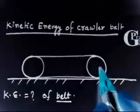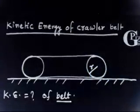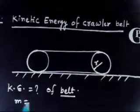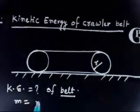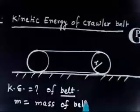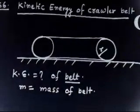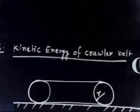The question says the radius of the wheel is r and the mass of the crawler belt is m. So mass m is the total mass of the entire belt from one end to the other. We have to find the kinetic energy of this system.